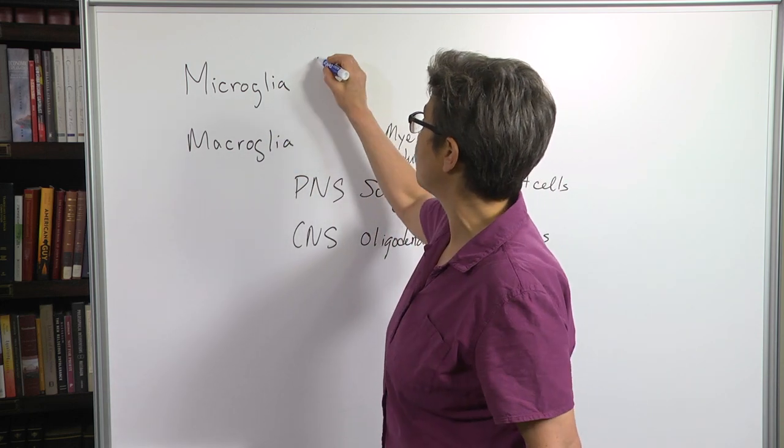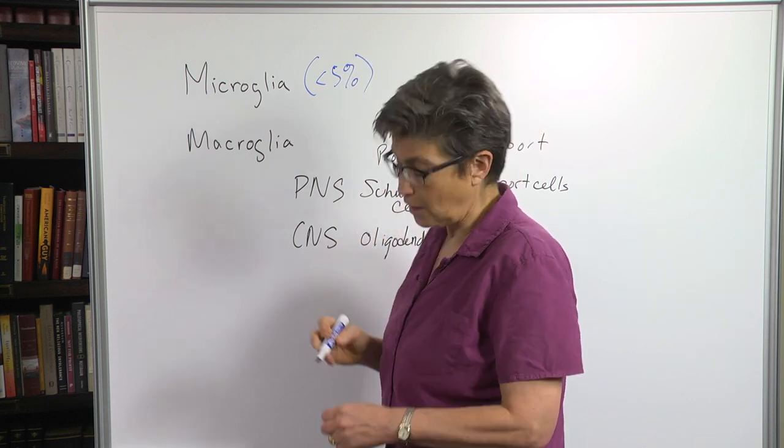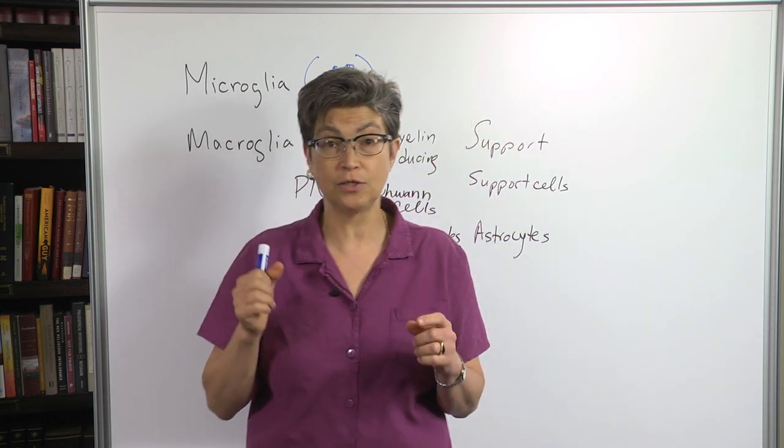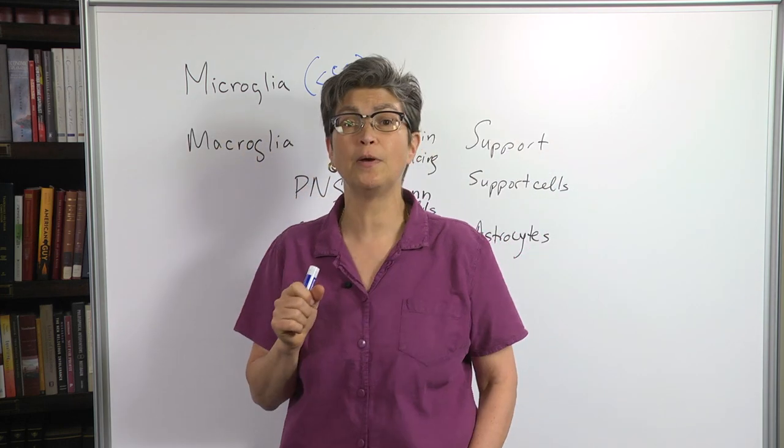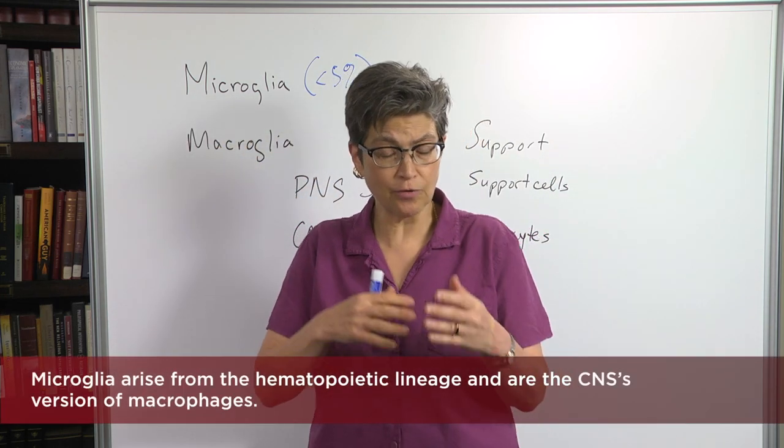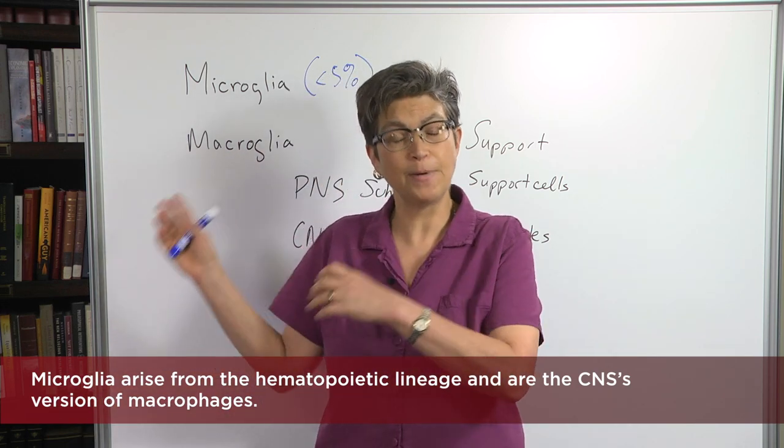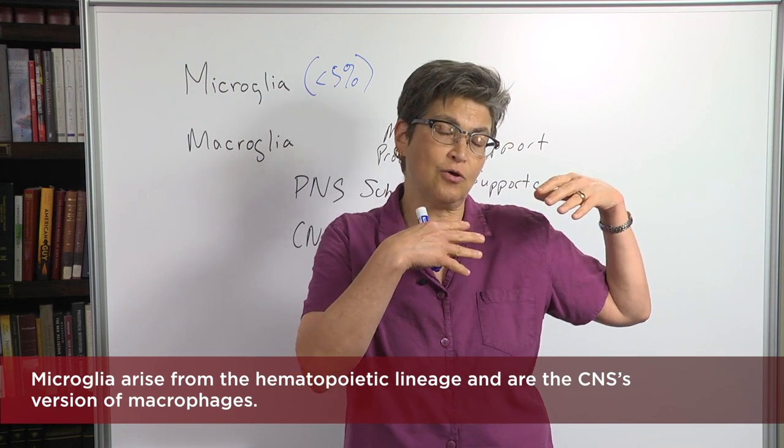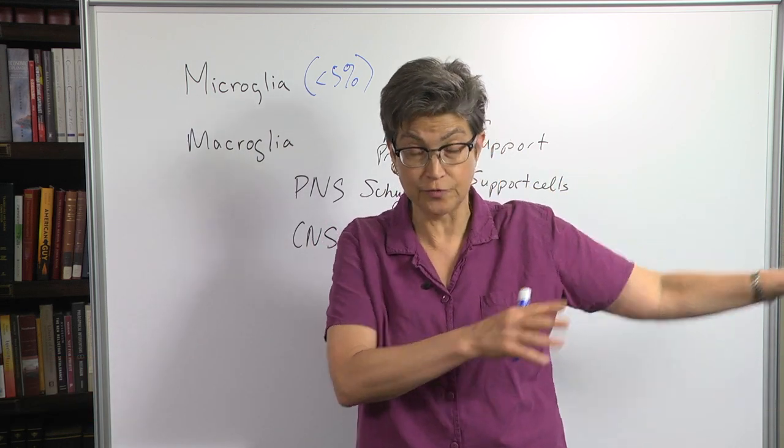Microglia are very small in number. It's less than 5% of the glia in the central nervous system. And these derive from the hematopoietic lineage. So they are very similar to macrophages. But they're modified macrophages that have entered the nervous system.